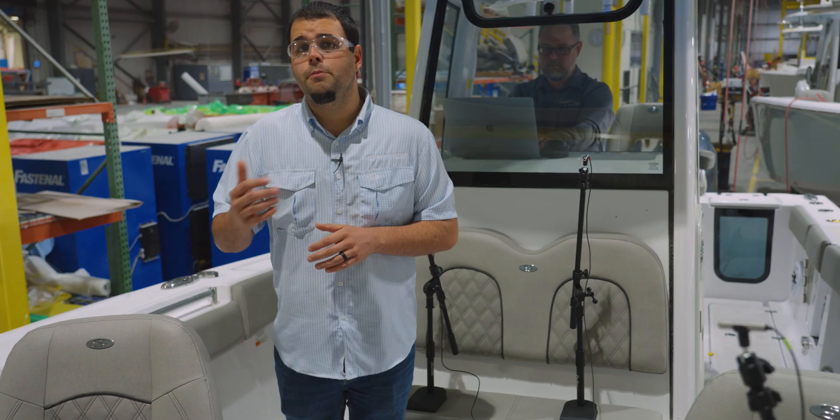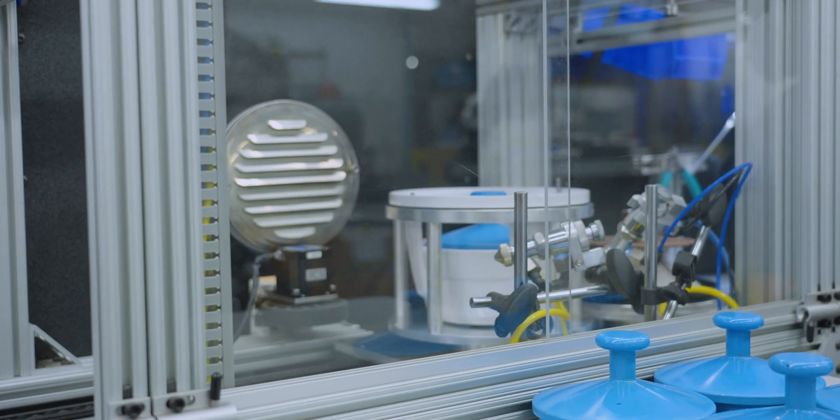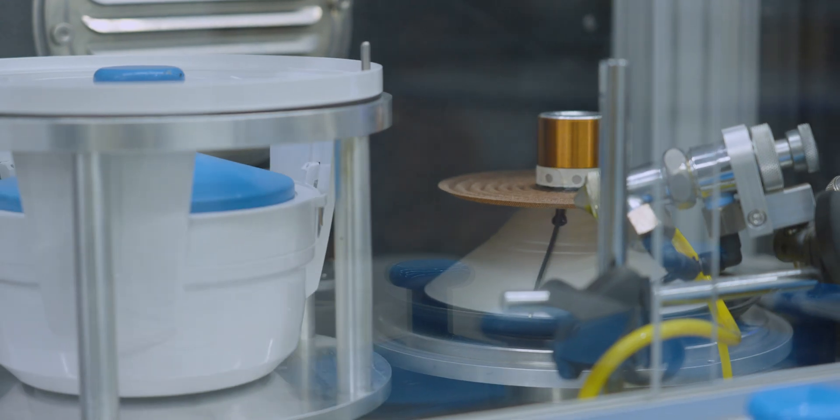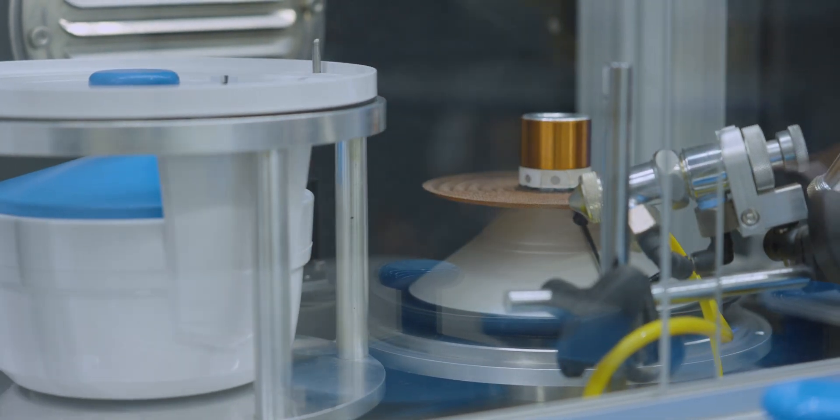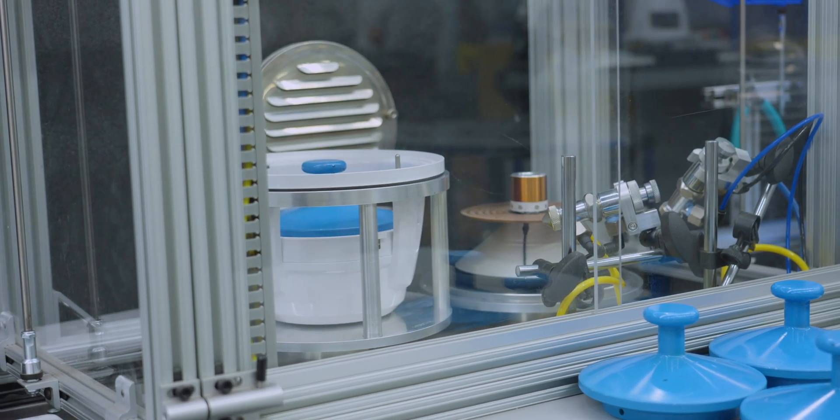The assemblies now move on to another chamber area where an accelerant is applied to quickly cure the glue. This ensures that everything is bonded and ready for the next step.